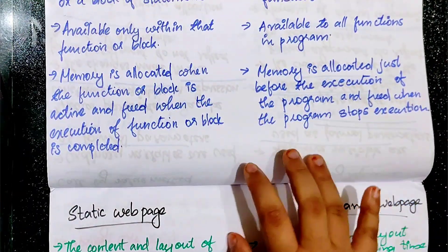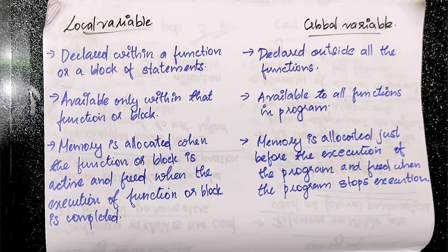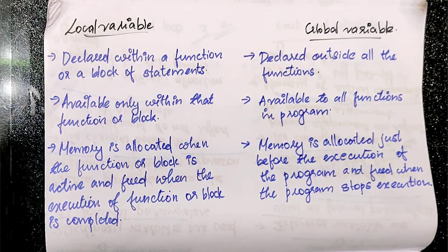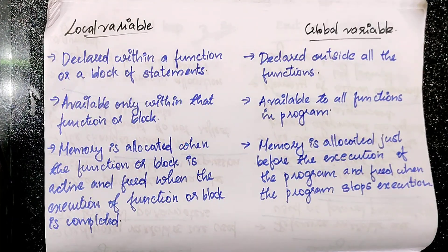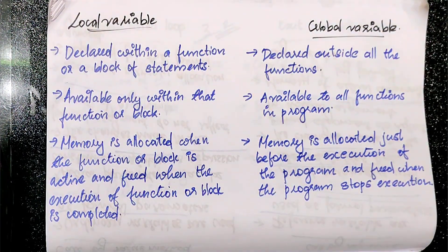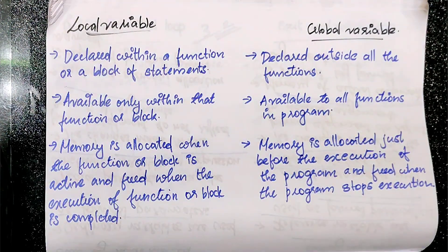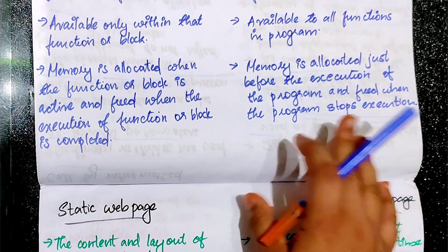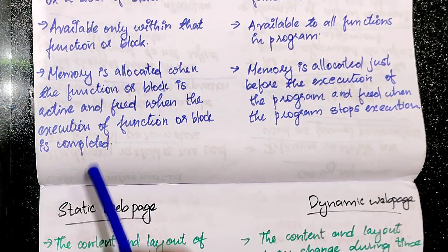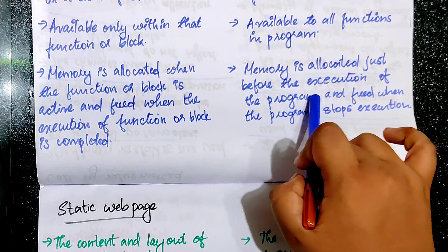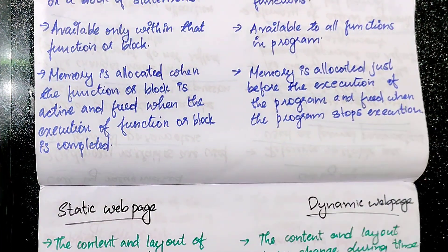The next question is local variables and global variables. Local variables are declared within a function or a block of statements, while global variables are declared outside all functions. Local variables are available only within that function or block. Memory is allocated when the function or block is active and freed when execution is completed. For global variables, memory is allocated just before the execution of the program and freed when the program stops execution.